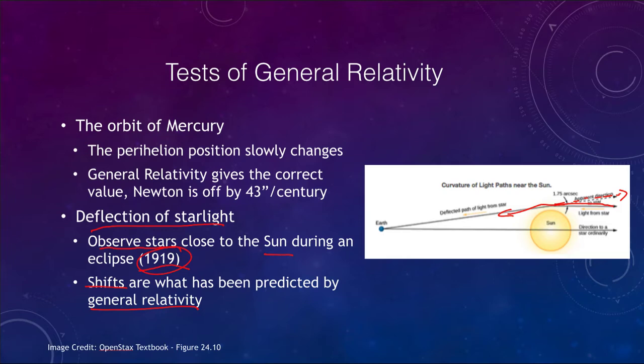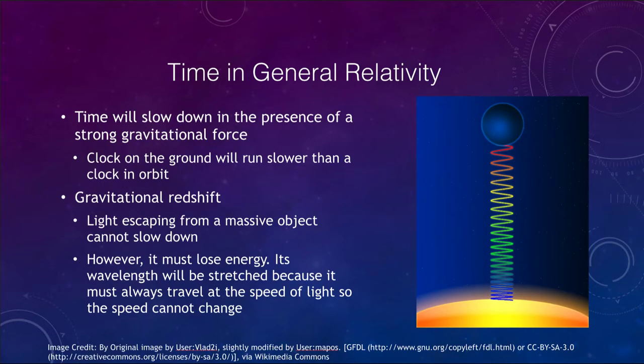Now, general relativity again looks not just at space, but at time as well. So what happens with time in general relativity? A couple things that we see is that time will slow down in the presence of a strong gravitational force, meaning that a clock on the ground will run slower than a clock in orbit. This can be tested as well. So this is something we can do with very accurate atomic clocks, having a clock here on the ground of the Earth and measuring it, putting another clock up in orbit and then comparing the two, we find that the clock on the ground will run slower than the clock up in orbit.